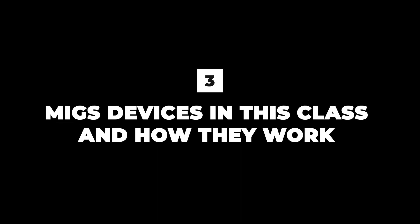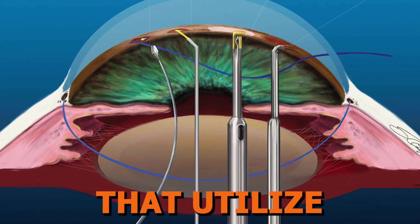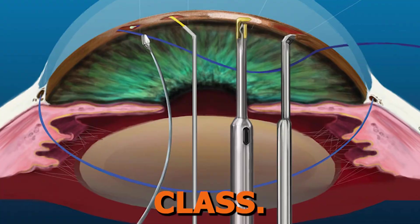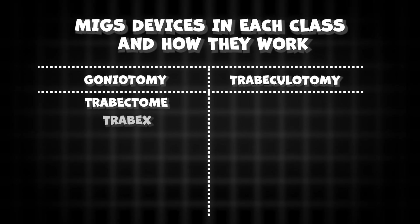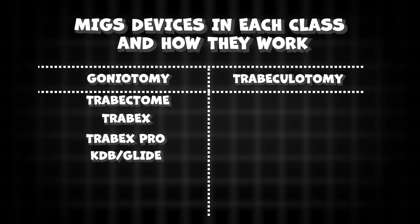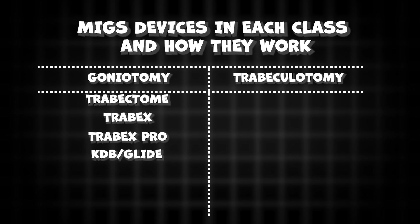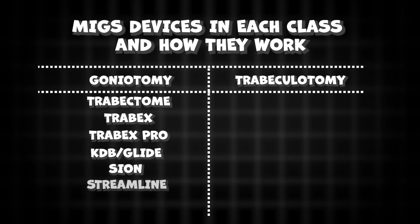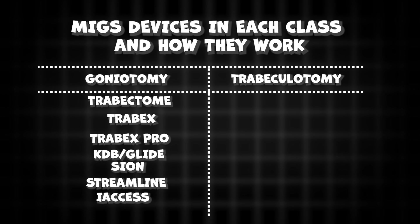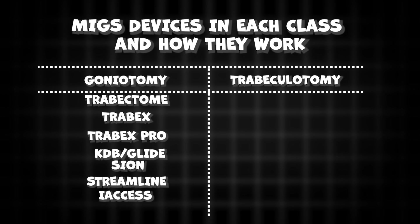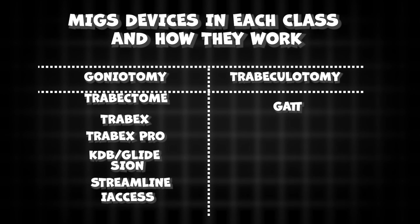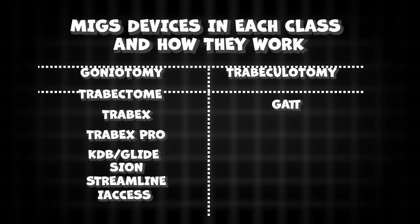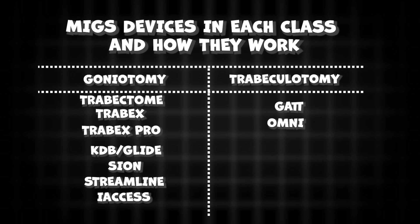Lesson 3: MIGS devices in this class and how they work. Goniotomy techniques can be attained with the Trabectome, Trabex, Trabex Pro, the Kahook Dual Blade, KDB slash KDB Glide, Scion, Streamline, and iAxis. For trabeculotomy procedures, this is performed with gonioscopy-assisted transluminal trabeculotomy, or GATT, and the Omni surgical system.